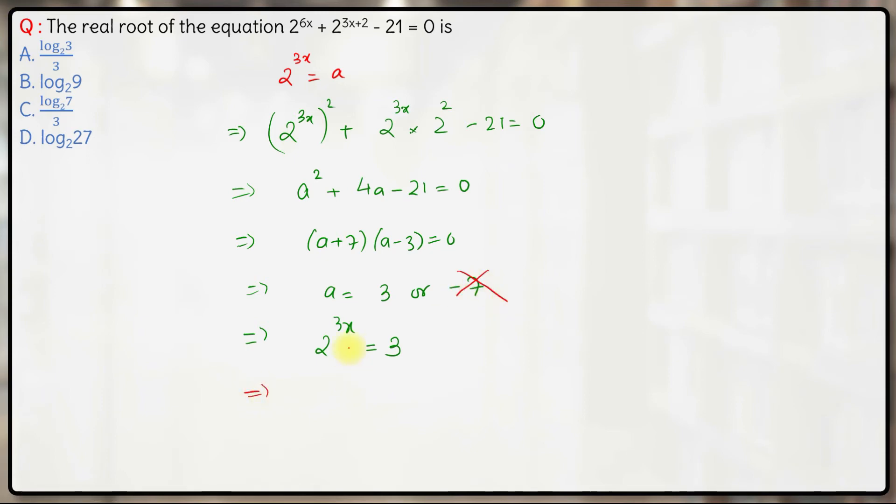Hence, once we take log on both sides, we'll have 3x log base 2. So 3x will be equal to log of 3 base 2, and hence x comes out to be log of 3 base 2 divided by 3.